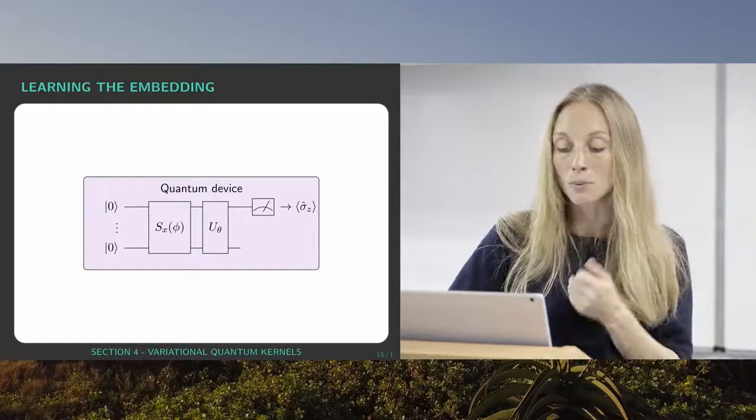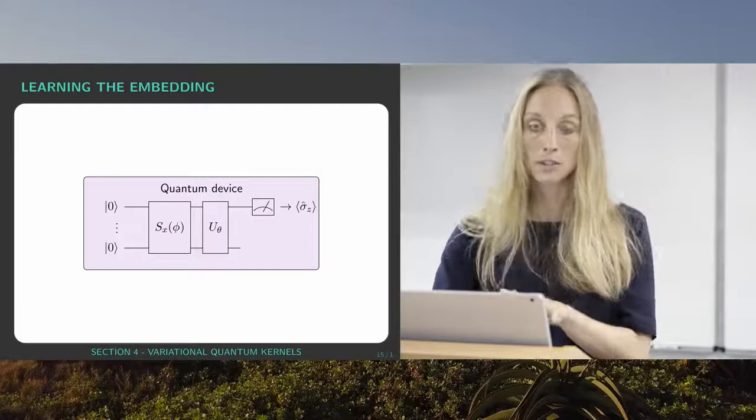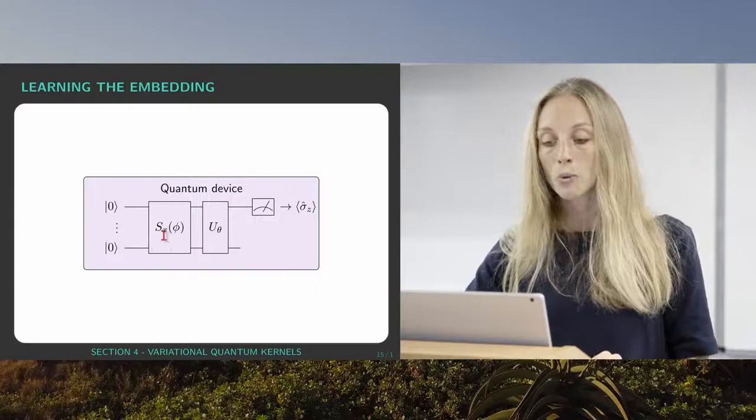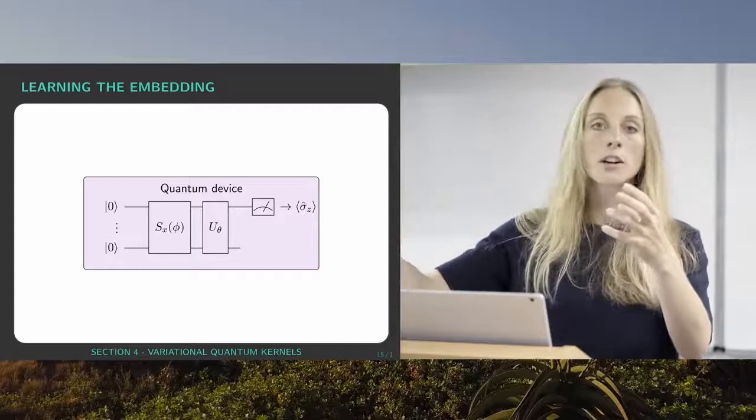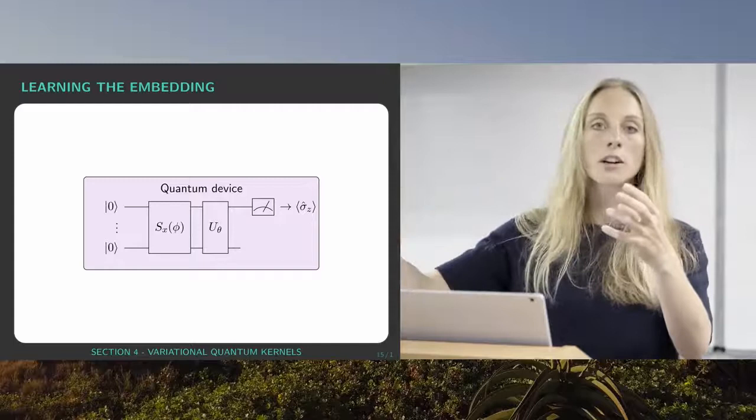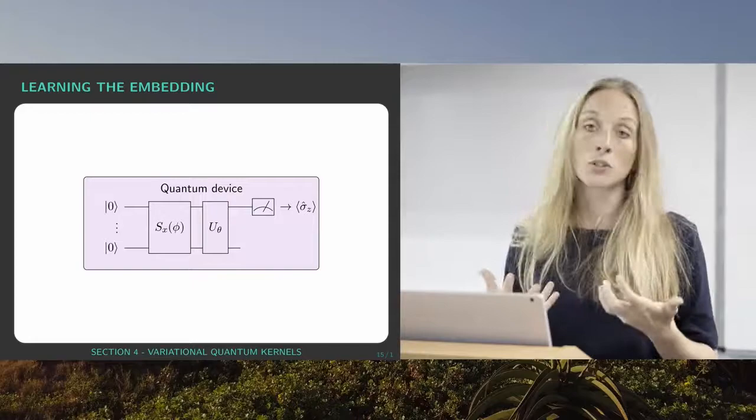But on paper the idea reads as follows. Instead of having just the state preparation routine S_X which is hard coded, we make it also depend on a couple of parameters. This could mean, for example, that I encode my first feature with an RX rotation and then have a free parameter with another RX rotation and learn that parameter in order to maybe learn a certain feature map.